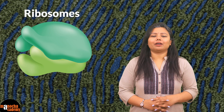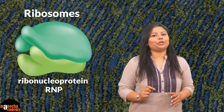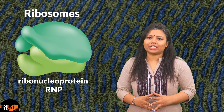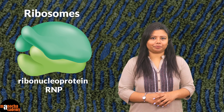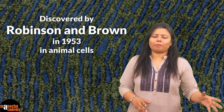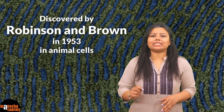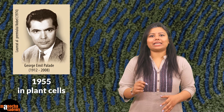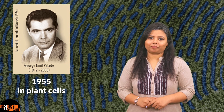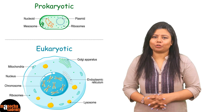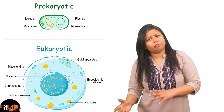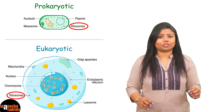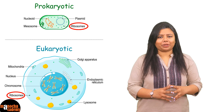Ribosomes are naked ribonucleoprotein particles, or RNPs, that are present in all eukaryotic and prokaryotic cells. Ribosomes were first discovered by Robinson and Brown in 1953 in animal cells, and by Pallid in 1955 in plant cells. They are found in both prokaryotic and eukaryotic cells, although in prokaryotic cells their structure varies from that in eukaryotic cells.